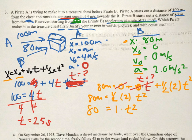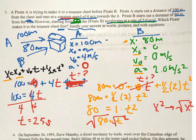For A, 100 equals 0 plus 4t. The acceleration term is 0, so it goes away. 100 equals 4t, divide by 4 on both sides. 100 divided by 4 gives you 25 seconds. For Pirate B, 80 equals 0 plus 0 times t plus ½ times 2 times t². The v₀ term is 0, so 80 equals 1 times t², or 80 equals t².